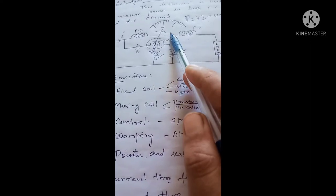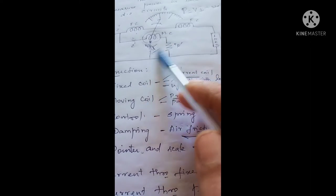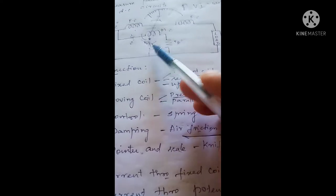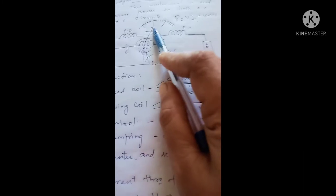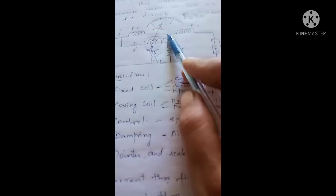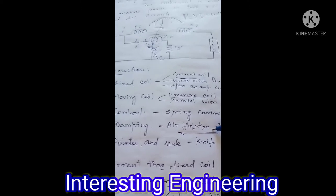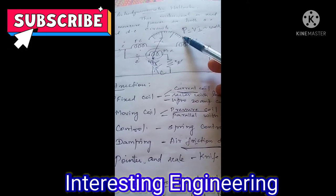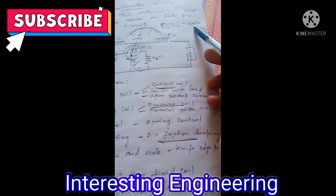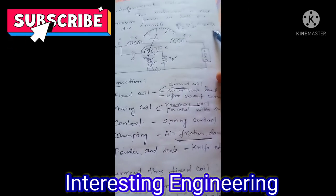In this wattmeter, we provide supply voltage, and based on this voltage current flows through the two coils. That current induces a magnetic field, and when the moving system is placed in this magnetic field it develops a deflecting torque. When that deflecting torque is balanced by the controlling torque, the pointer remains in a steady position indicating power in watts.